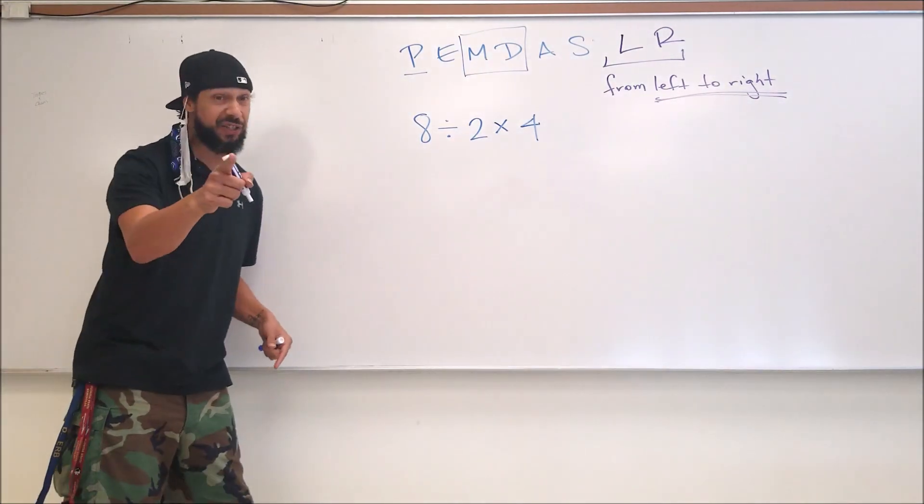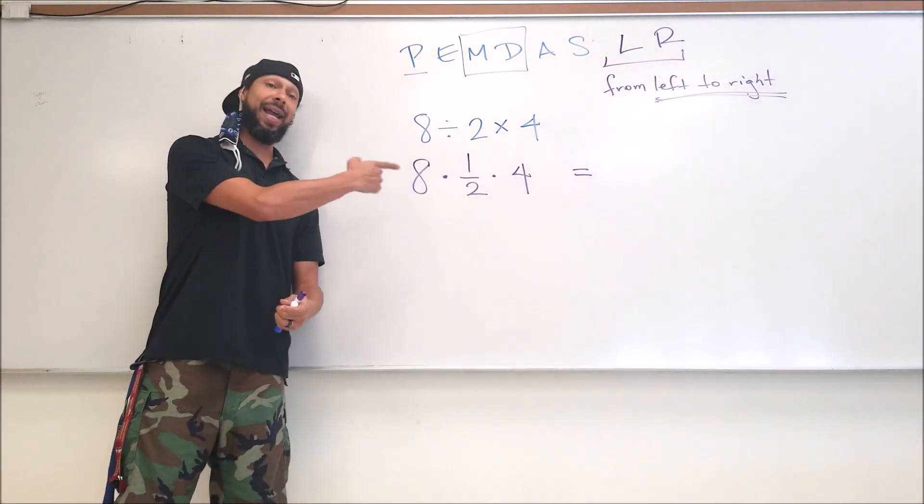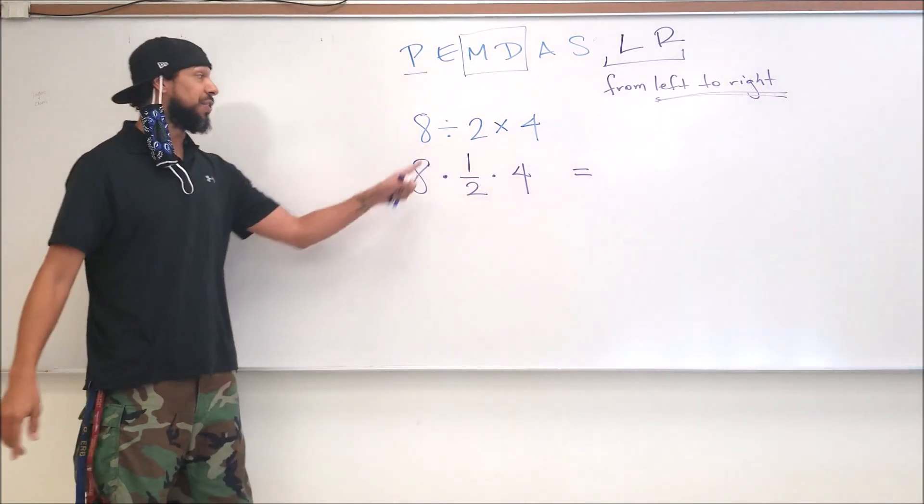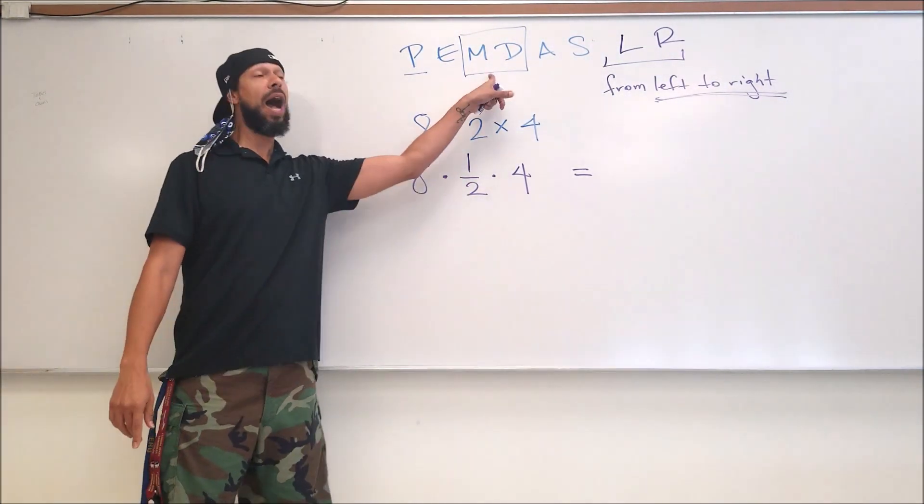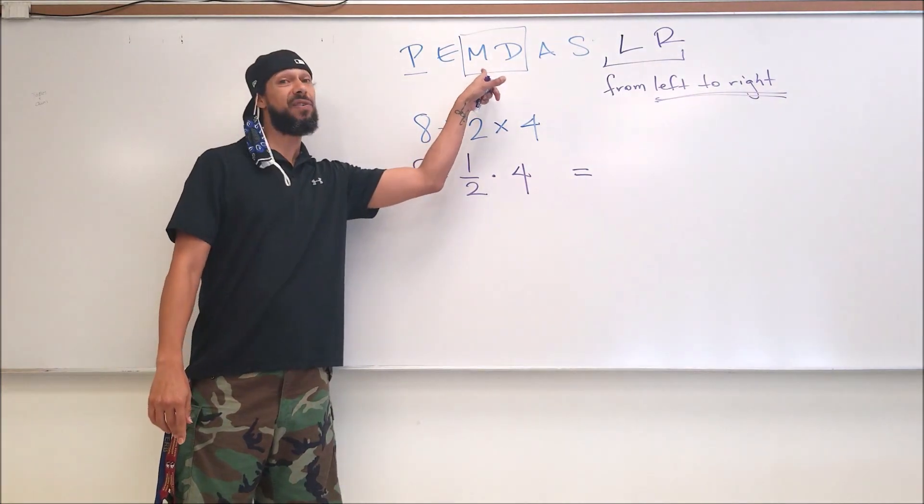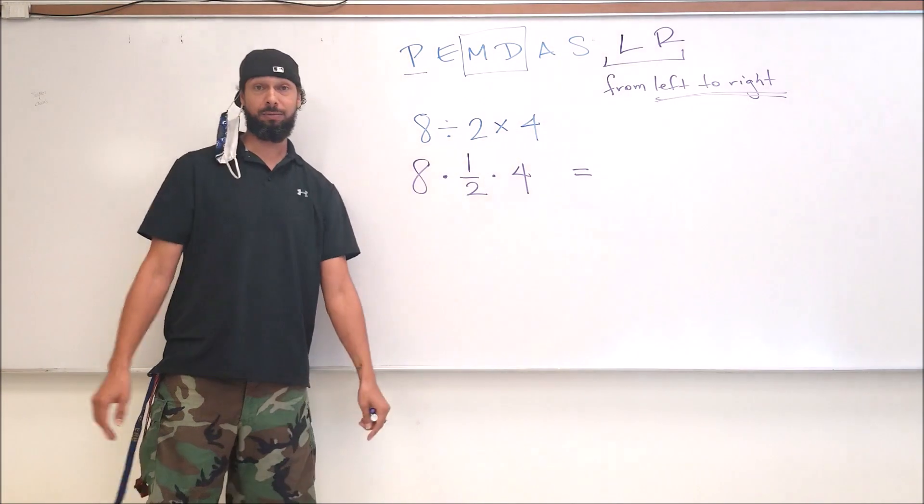Watch this. Instead of writing eight divided by two, I'm going to change this into eight times one half. Same thing. Dividing by two is the same as multiplying by a half. That's why we talk about multiplication and division happening at the same time - we're on the same level.